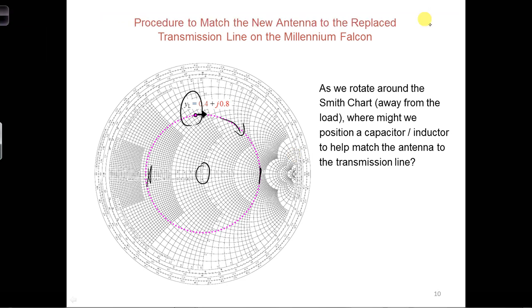We do reach a position where the real part is equal to 1, and that is when we cross the R equal 1 circle. That happens at two different positions, and of course it repeats as you go around and around. But it happens right here and right here.